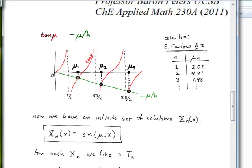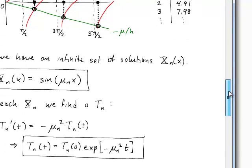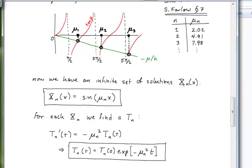This equation has viable solutions because the tangent function has many branches — between ±π/2, between π/2 and 3π/2, etc. — and the line minus μ over h intersects each branch at a nonzero point, yielding non-trivial eigenfunctions. Stanley Farlow's textbook gives numerical values for h equals one: μ₁ ≈ 2.02, μ₂ ≈ 4.91, μ₃ ≈ 7.98, increasing by approximately π each time.